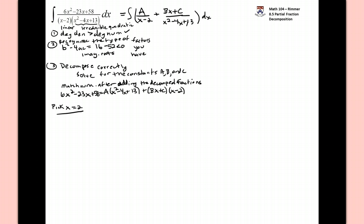We're going to pick x to be equal to 2 because it would make this x minus 2 term go away. On the left-hand side, we'd have 6 times 4 minus 23 times 2 plus 58. On the right-hand side, we'd have a, and it would be multiplied by 4 minus 8 plus 13. So working with the left-hand side, we have 24 minus 46 plus 58. That's 82 minus 46, it ends up as 36.